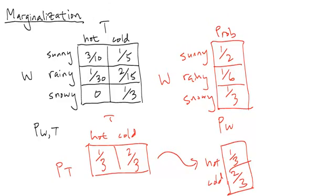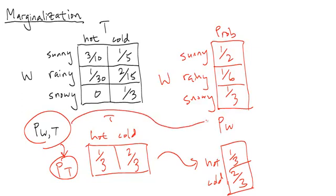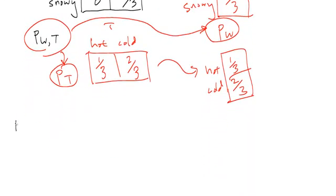The point is that given the joint probability table for W and T, I can figure out what the probability table is for just T by itself and for just W by itself. Pictorially, hopefully this makes sense. The other thing is how do we actually write this up in terms of math, and the notation we'll use is as follows.